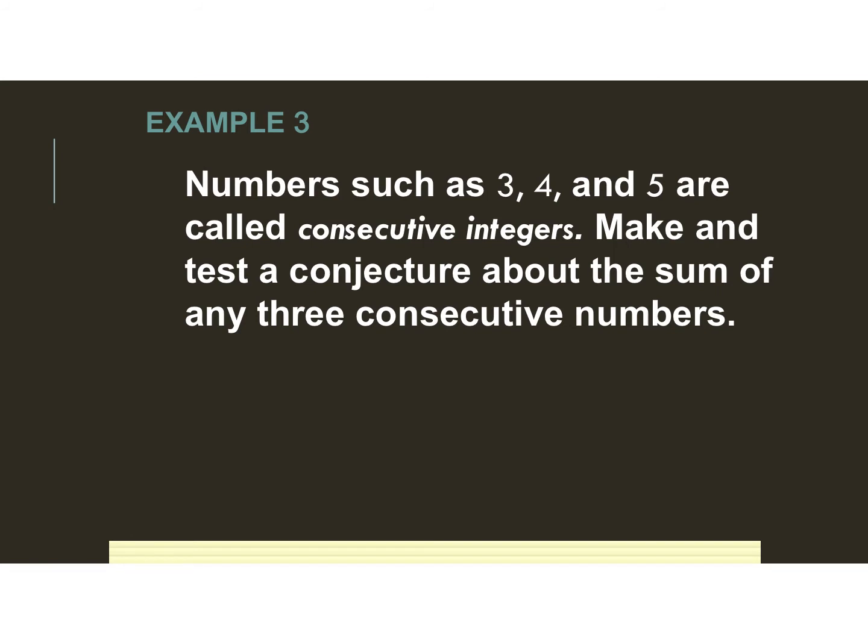Numbers such as 3, 4, and 5 are called consecutive integers — you probably saw problems describing consecutive integers in Algebra 1. It says: make and test a conjecture about the sum of any three consecutive numbers. We're going to use inductive reasoning, picking random groups of three consecutive integers and adding them to see if there's a pattern. Let's try small numbers first; if we can't see it, we'll jump to bigger numbers.